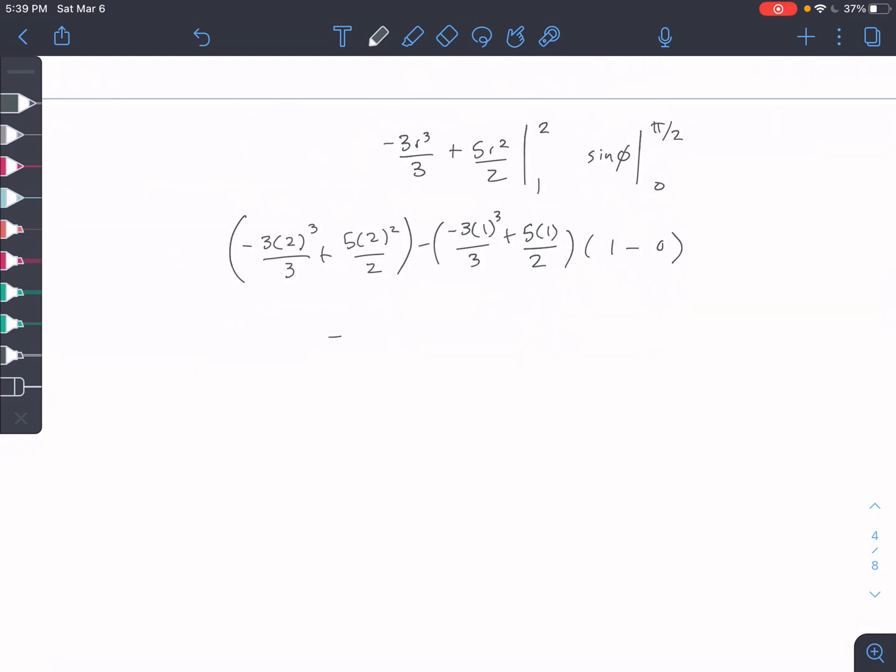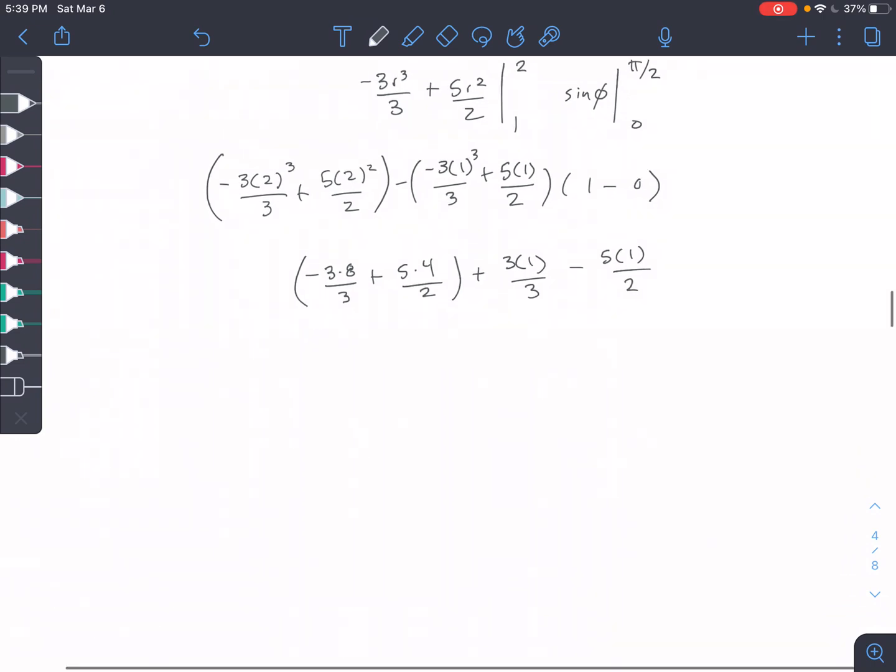So minus 3 times 8 over 3 plus 5 times 4 over 2. Okay. Minus 3 times 1 over 3. Oh, I'm sorry. Minus a negative, so plus. Let's distribute that negative. Plus and then minus 5 times 1 over 2.